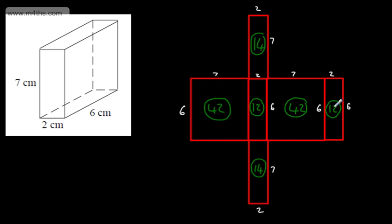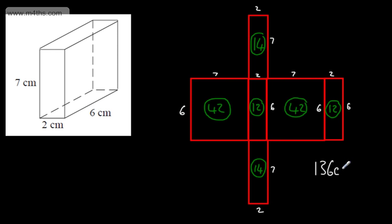So all I do is simply go ahead and add them up. 14 plus 12 gives me 26, then 68, 80, 122, 136. So adding them all up, I'd have 136 centimetres squared.